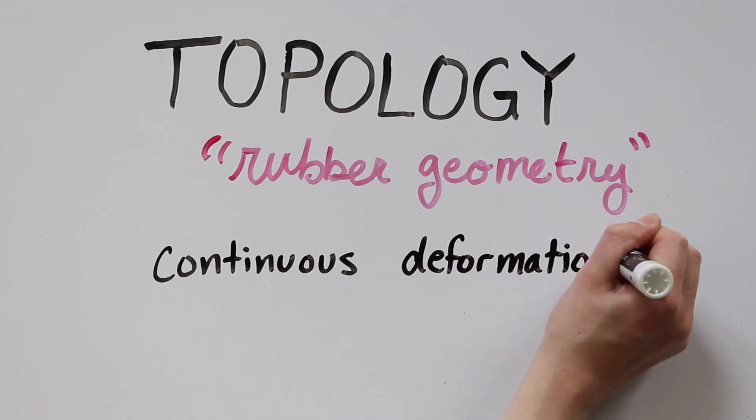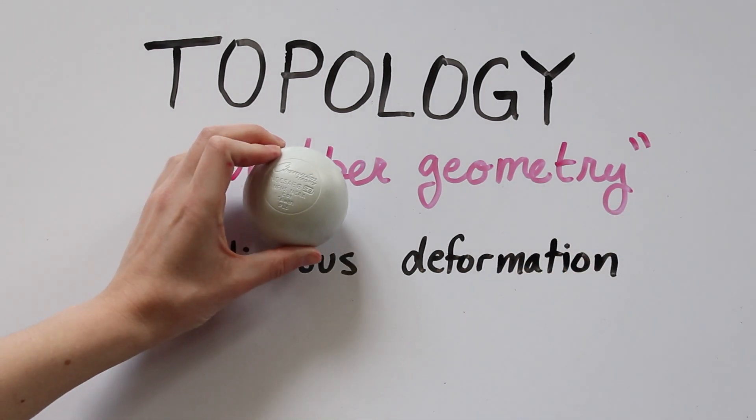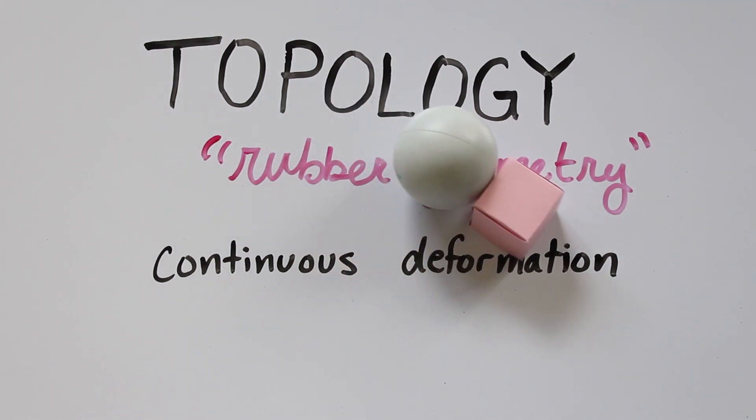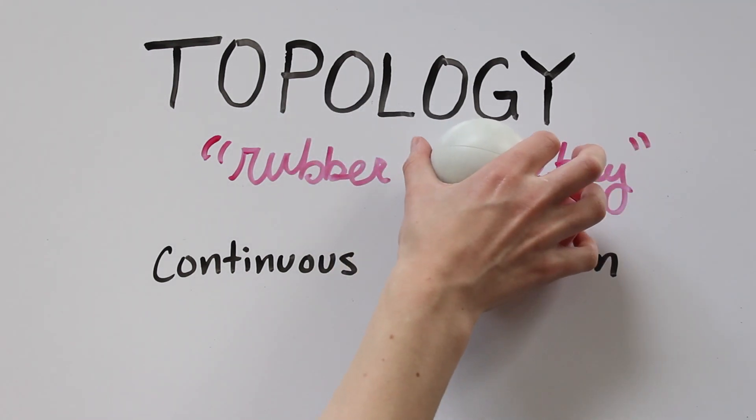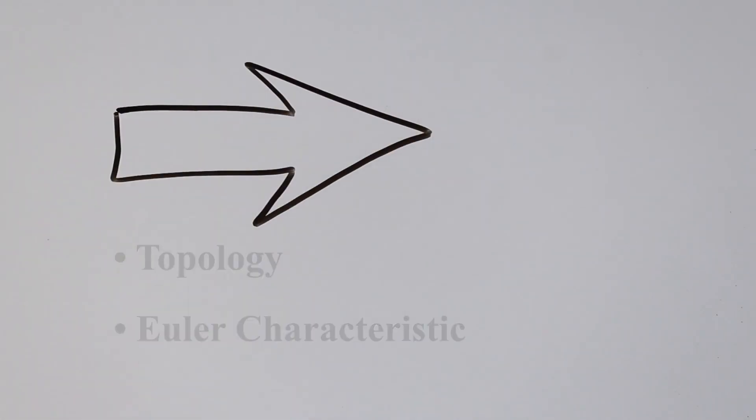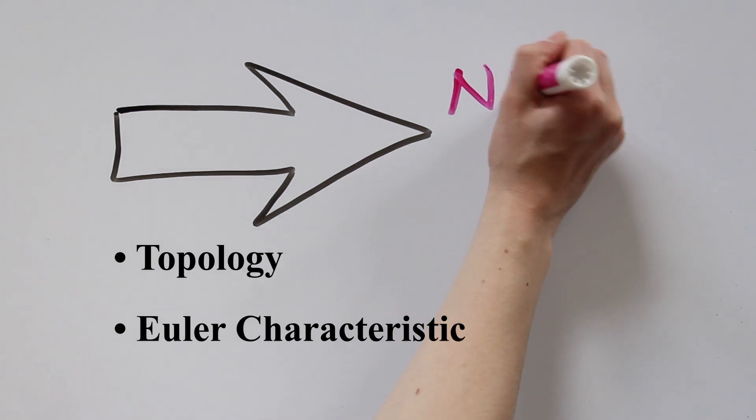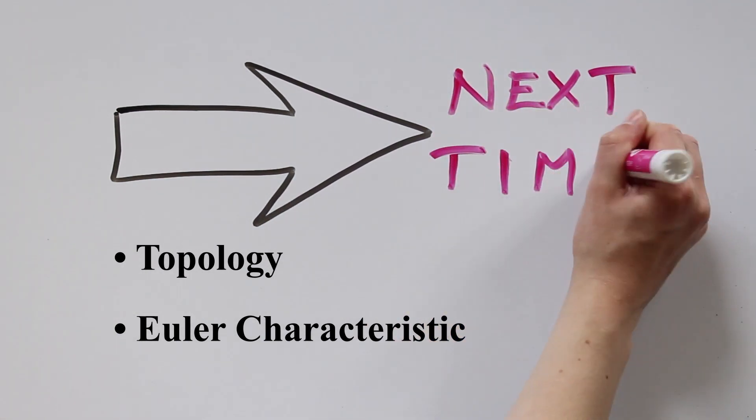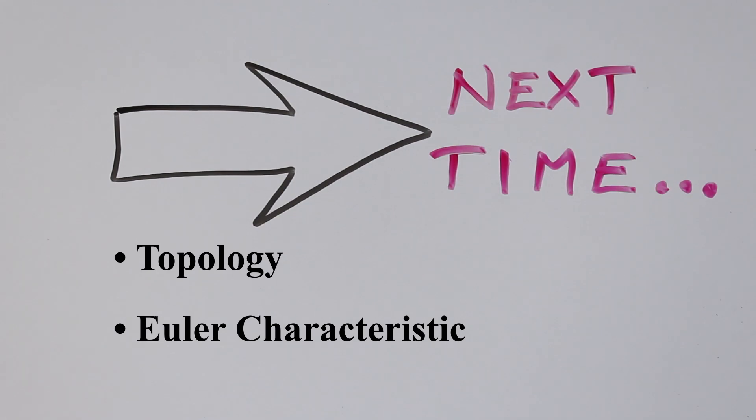So for a topologist, the sphere and the cube would be the same shape. We're going to talk more about topology and something called the Euler characteristic next time. See you soon, and as always, keep exploring!